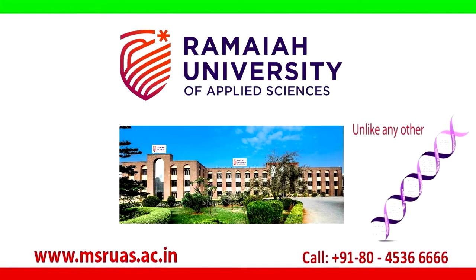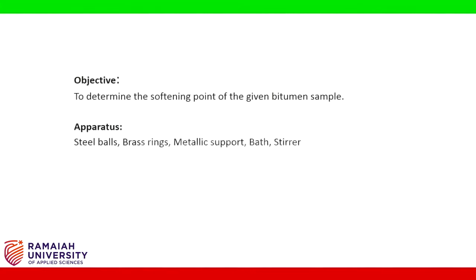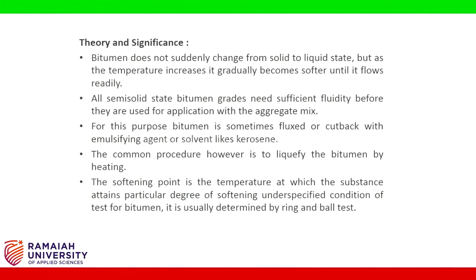MSR Ramaiah University of Applied Sciences. Hello students, with this experiment we are determining the softening point of the given bitumen sample. Apparatus required: steel balls, brass rings, metallic support, bath and stirrer. Bitumen does not suddenly change from solid to liquid state.